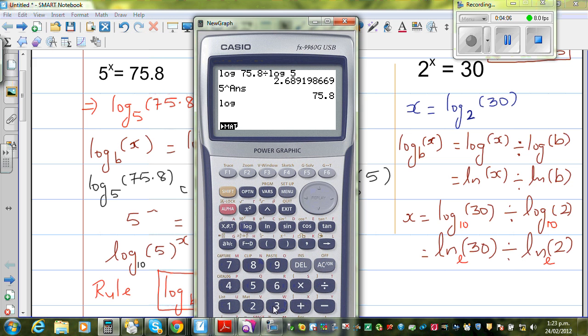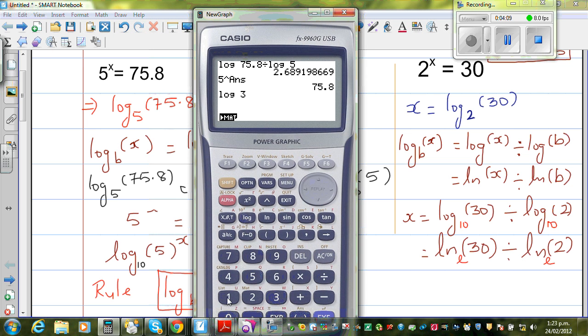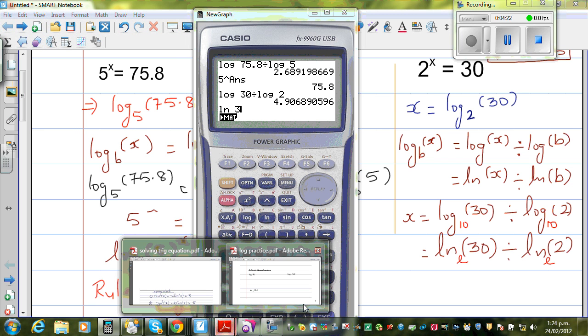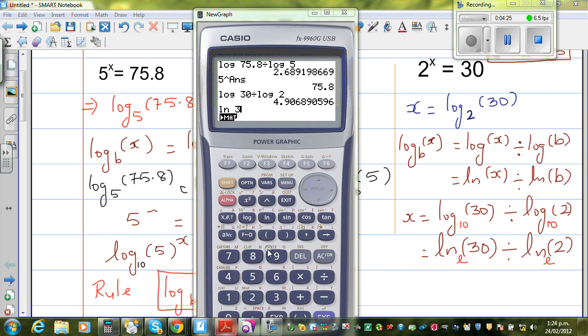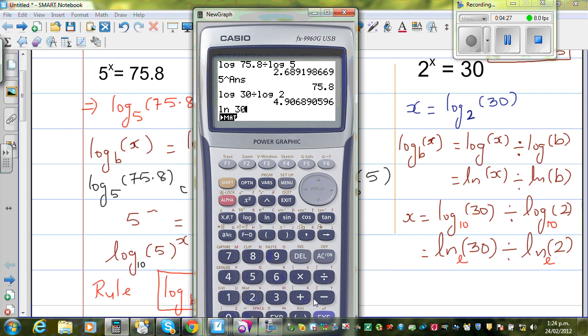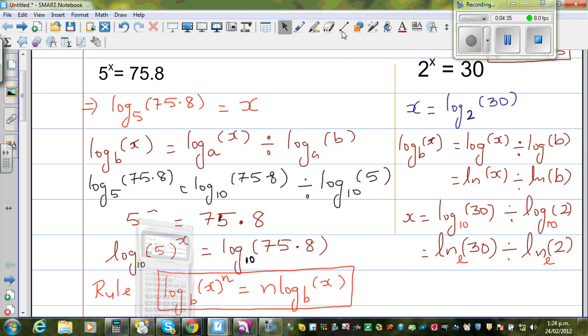You press log 30 divided by log 2 - that would be 4.9. Or you can also press natural log of 30 divided by natural log of 2, which will give you the same number. So the answer is x equals 4.9 in one decimal place.